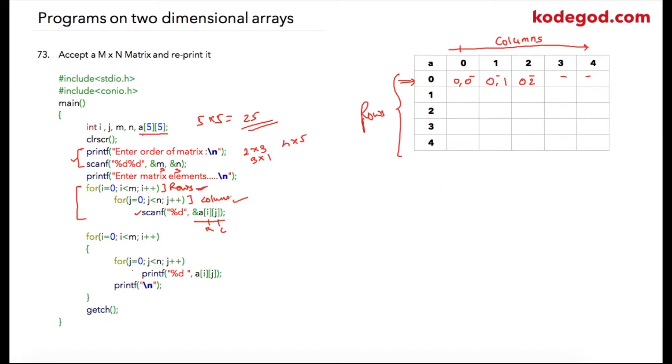So one zero, one one, one two will be scanned. Similarly, in the final iteration, two zero, two one, and two two will be scanned. So these are nothing but your array locations that can be accessed using values of i and j as index variables.